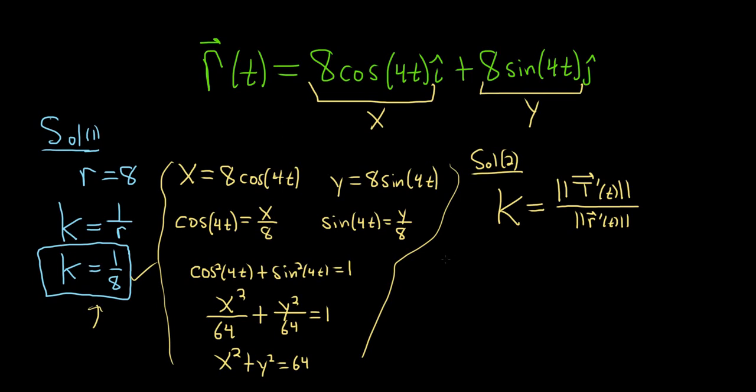So I guess we'll start by taking the derivative of r. And you know, before I do that, I'm going to rewrite r in component form just to make things look better. So 8 cosine 4t and then 8 sine of 4t. It just looks a little bit cleaner. All right.